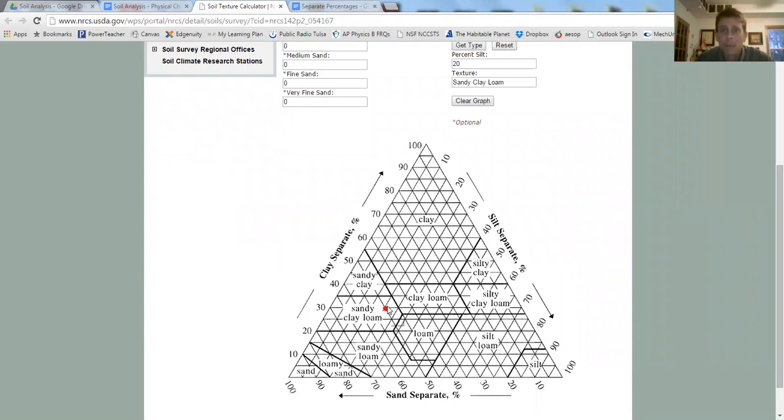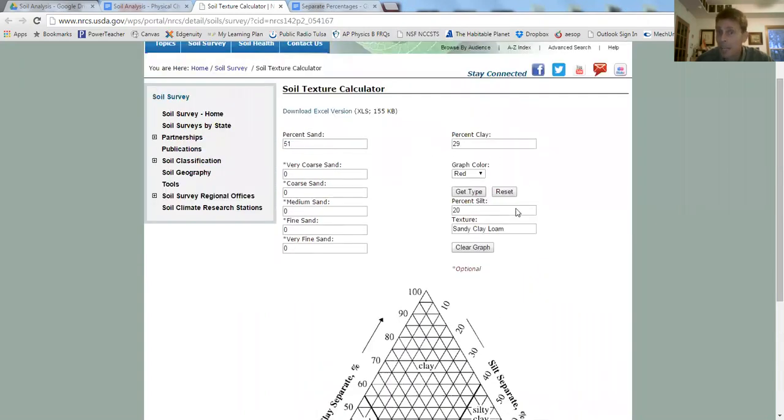So that should help you do your calculations, figure out what the soil type is. The soil texture type is on your triangle. And then, if you need to verify that, there you go. All right. Good luck.